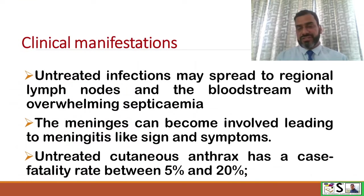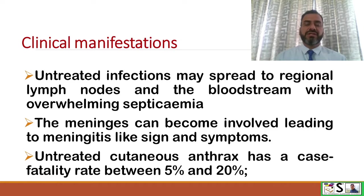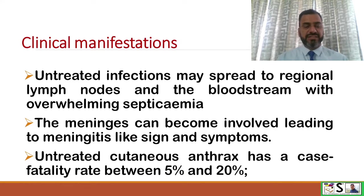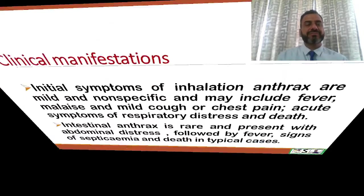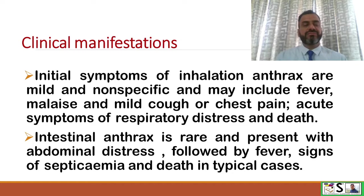Untreated infections may spread to regional lymph nodes through the bloodstream, with overwhelming septicemia in the whole circulatory system. The meninges can become infected, leading to meningitis-like signs and symptoms. Untreated cutaneous anthrax has a case fatality rate between 5–20%. Initial symptoms of inhalation anthrax are mild and non-specific, and may include fever, malaise, mild cough, and chest pain.